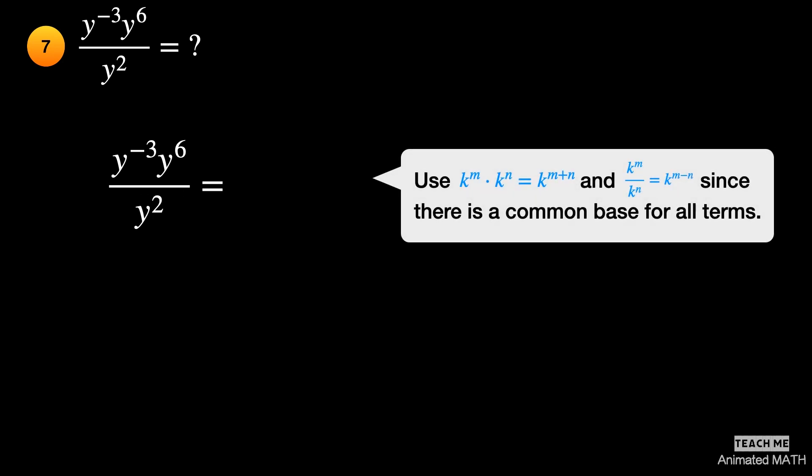The base is y for all terms. This means that the 5th and 6th properties can be applied to simplify the expression. Add the exponents negative 3 and 6, and subtract 2, which makes the new exponent of y 1. The final answer is y.